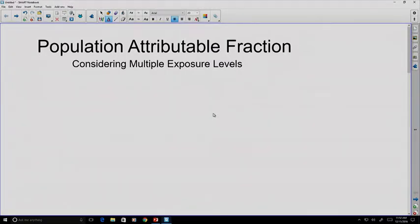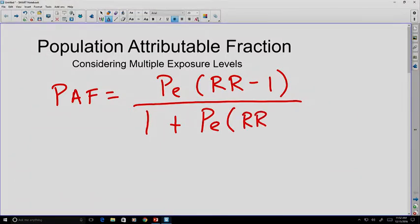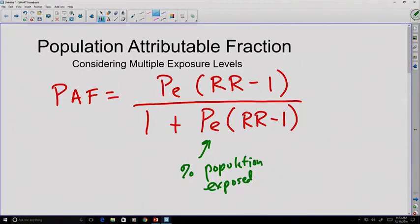If we go back and recall our definition for the population attributable fraction earlier, we saw that we could take a proportion of the population that's exposed, PE, and multiply it by the relative risk, subtracting a value of 1. The denominator in that case is 1 plus that same value, the portion of the population exposed, and this relationship with the relative risk. So our values are the percentage of the population exposed, or perhaps I should put the fraction of the population exposed, and the relative risk of the exposure.